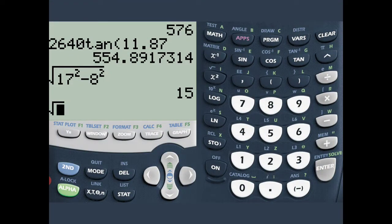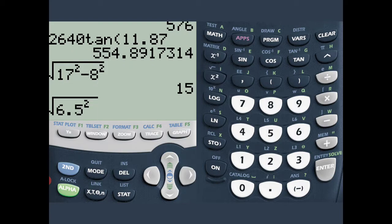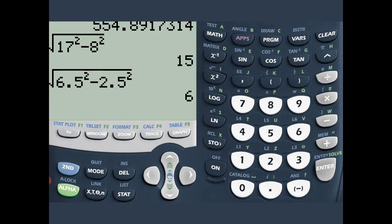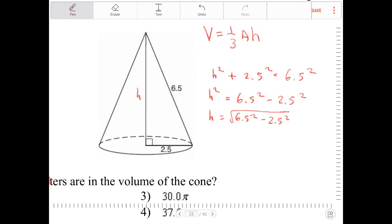So square root of 6.5 squared minus 2.5 squared. That will be 6. So h is equal to 6.